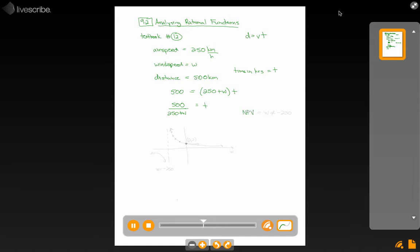Our non-permissible value here is that W can't equal negative 250. Now, if the wind speed is 250 kilometers per hour in your face, you've got bigger problems than it taking a long time for you to get there. But the divide by zero problem exists, so that's our non-permissible value.